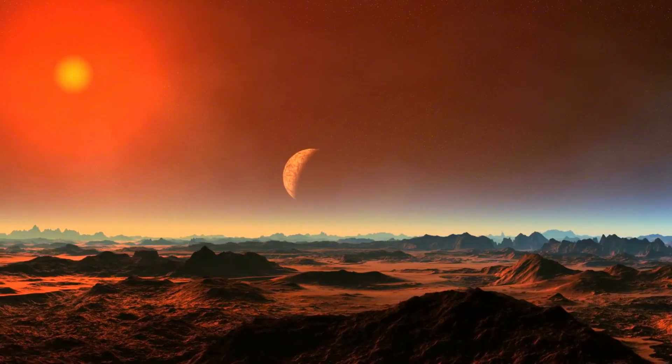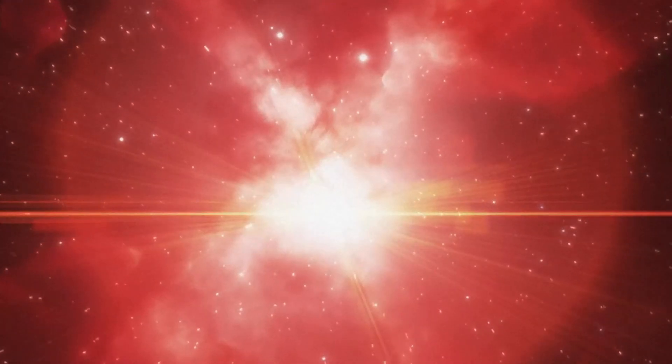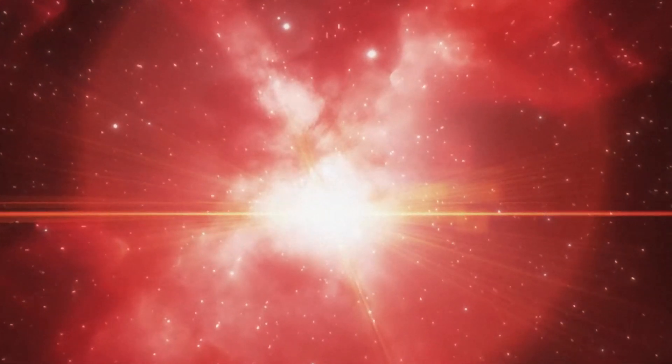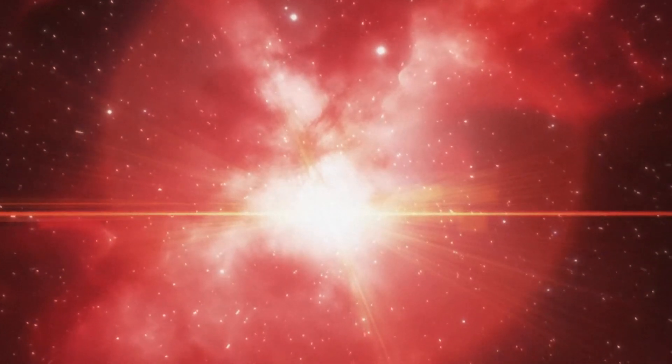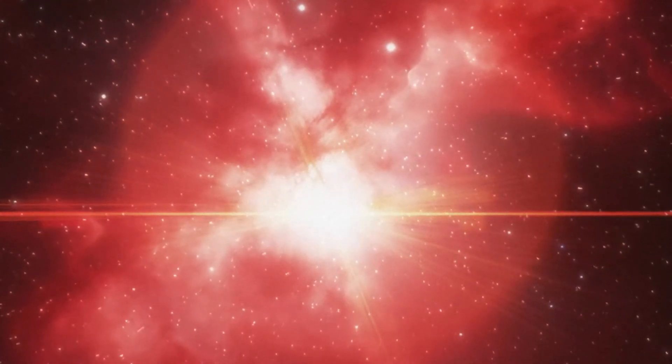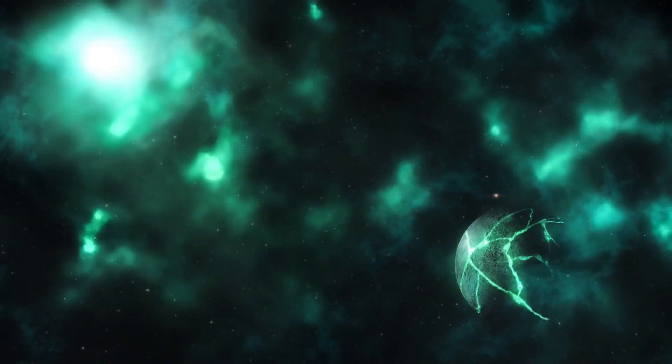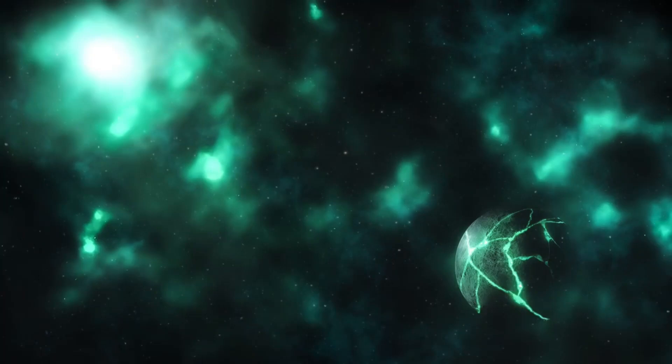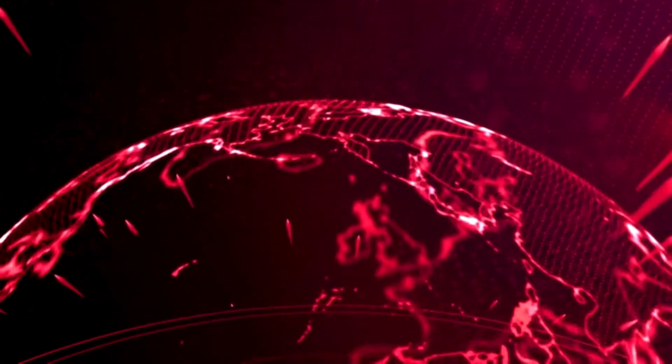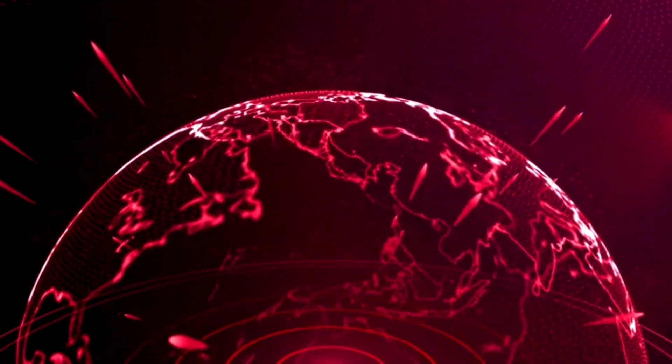Another exoplanet, first identified in 1988, was confirmed in 2003. As of April 1, 2024, there are 5,653 confirmed exoplanets in 4,161 planetary systems. Of these, 896 systems have more than one planet. These sublime discoveries are surrounding an M-type star.